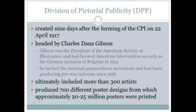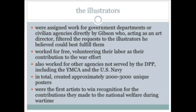Charles Dana Gibson is best known for his creation of the Gibson Girl — the embodiment of the new woman in the 1890s and 1900s. Gibson was so successful in his career that he actually paid all of the expenses of the DPP out of his own pocket. The illustrators he chose to work for the DPP were, for the most part, classically trained academic artists who had chosen, like Gibson, to work for the commercial mass media.